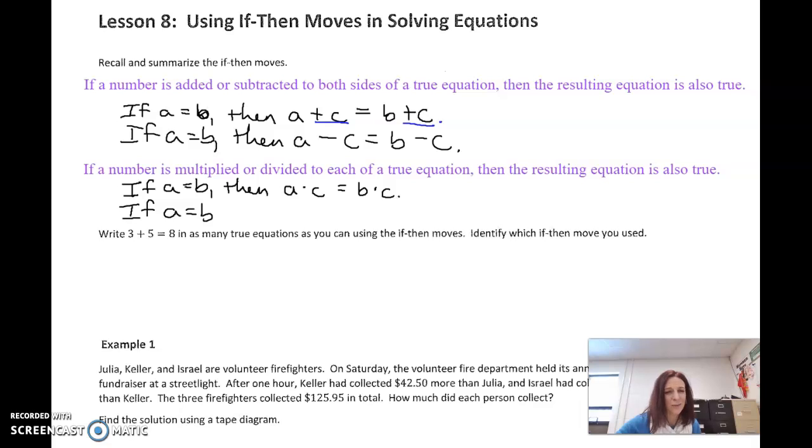Likewise, if a equals b and c does not equal zero, because we cannot divide by zero, you cannot take something and break it into zero groups, then a divided by c has to equal b divided by c. Basically, all these if-then moves are if it's true to begin with, as long as whatever you do to one side you do the other, it stays true.